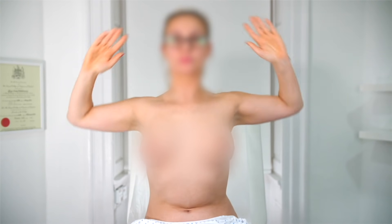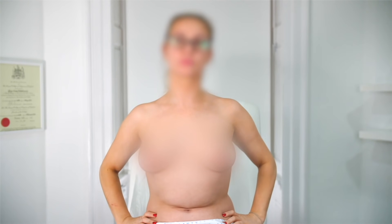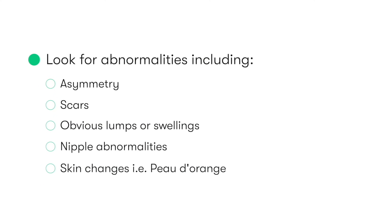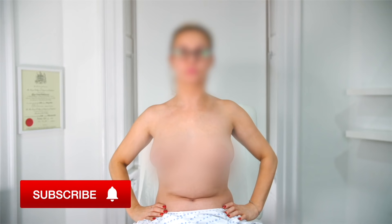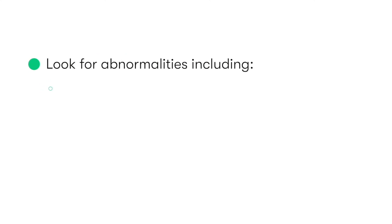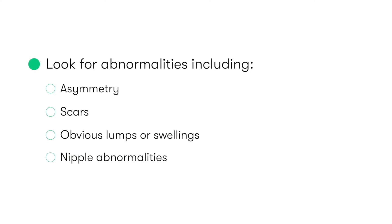The patient is then asked to gently rest their hands upon their hips, without contracting the pectoral muscles. The breast is again inspected for irregularities, asymmetries, and also any skin changes, such as peau d'orange or eczema. We then ask the patient to press their hands into their hips to contract the pectoralis muscles, and again we inspect the breast for asymmetries, irregularities, or any evidence of tethering of a mass that may have invaded the pectoralis fascia.